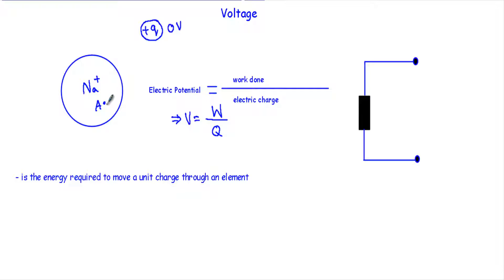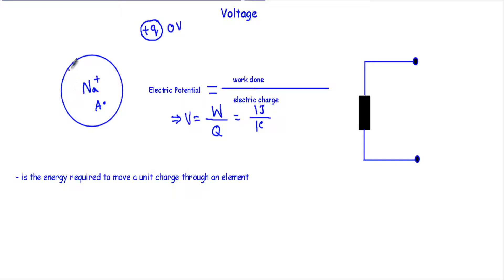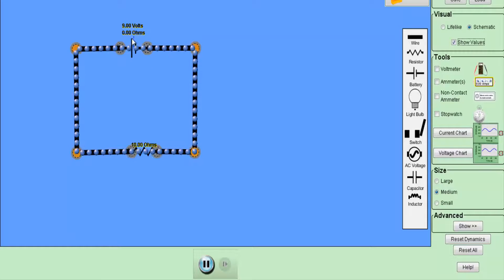I want to bring this positive unit charge to point A inside the electric field. Since the electric field is positively charged, it will repel this positive unit charge, so we have to do work against this repulsion. The work done in moving this unit positive charge from zero potential to this point inside the electric field against the repulsion is known as voltage. If I do one joule of work to bring one coulomb of charge to that point, the electric potential at that point equals one volt.